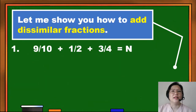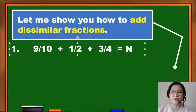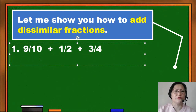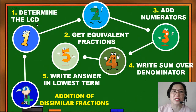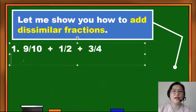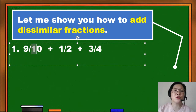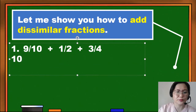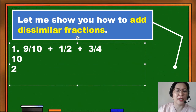Let me show you how to add dissimilar fractions. According to the rule, the first thing to do is to determine the LCD. I have shown you already how to do that. So the first thing to do is to get the LCD by finding the multiples of 10, 2, and 4. So let's have here 10, 2, then 4.